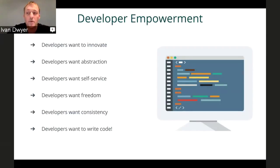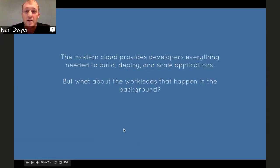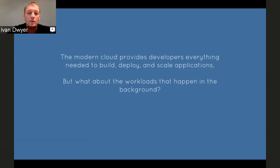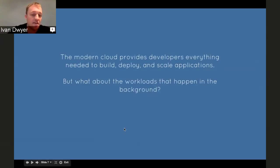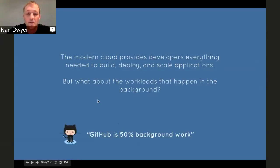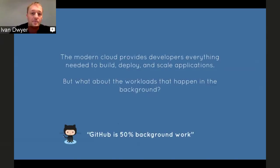At the end of the day, and most importantly, developers want to write code. The modern cloud stack really provides developers everything needed to build, deploy, and scale applications. But as it relates to this conversation — what about the workloads that happen in the background? Do they follow the same model? GitHub once said they were 50% background work, meaning half of everything that happens on GitHub is happening behind the scenes, away from the user interface.